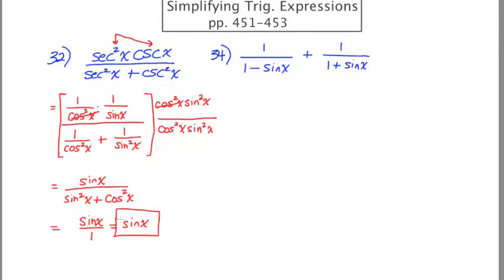Okay, number 34 is completely different. This is going to be a combining fraction situation. In order to combine fractions, whether adding or subtracting, you need to have a common denominator. So the common denominator here is going to be the product of both our existing denominators: 1 minus sine x, 1 plus sine x.